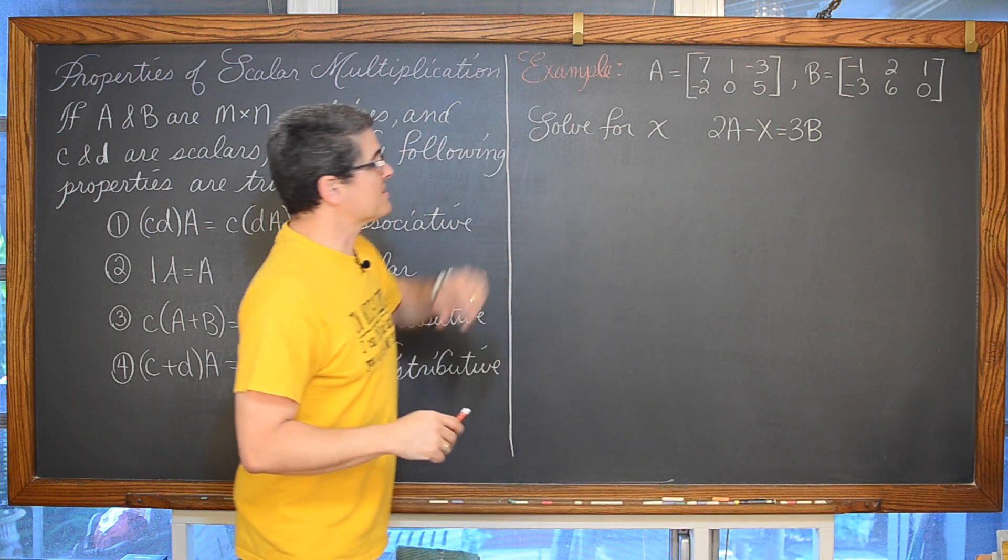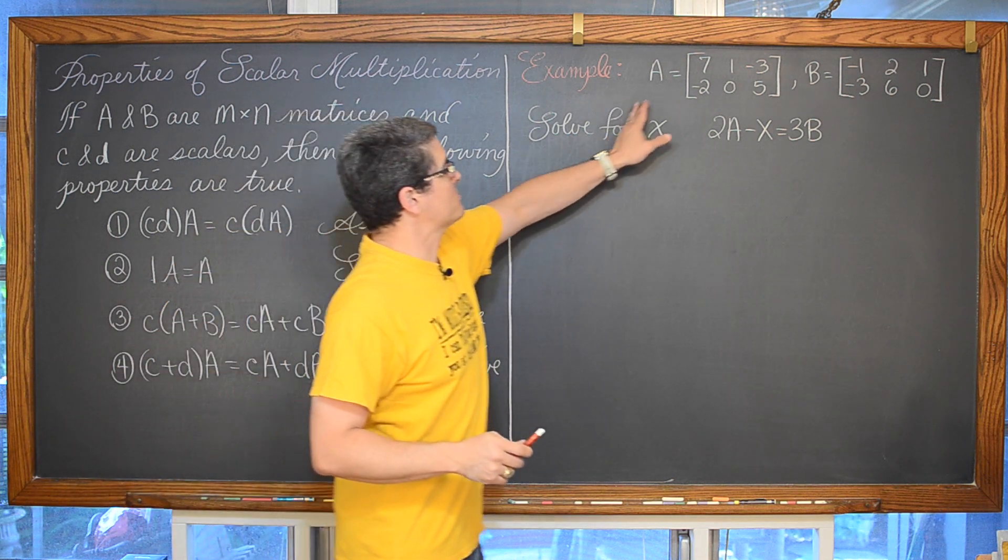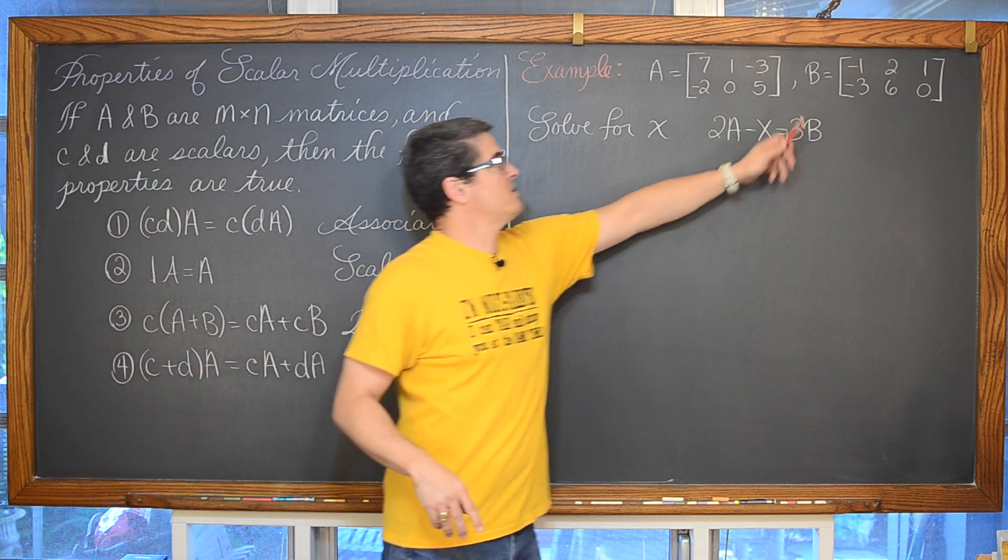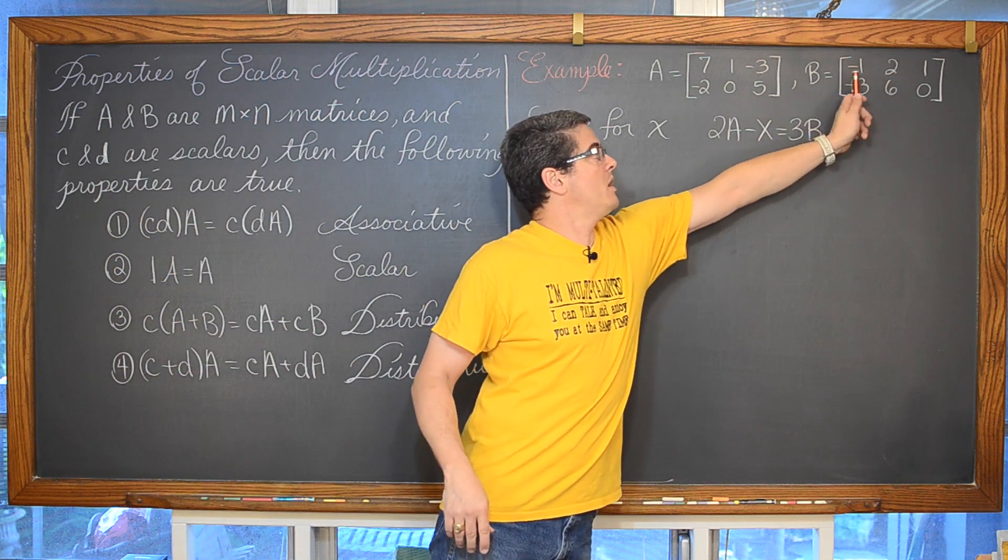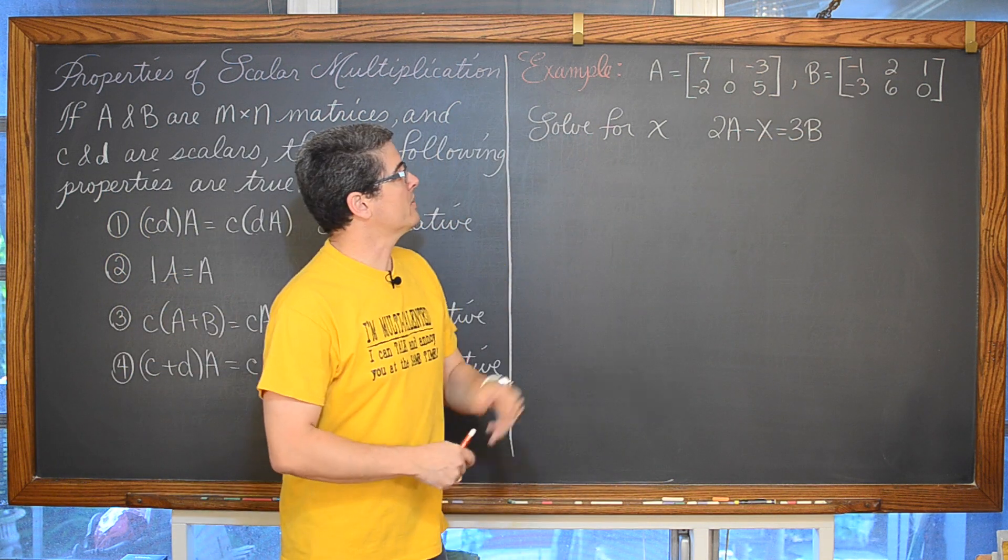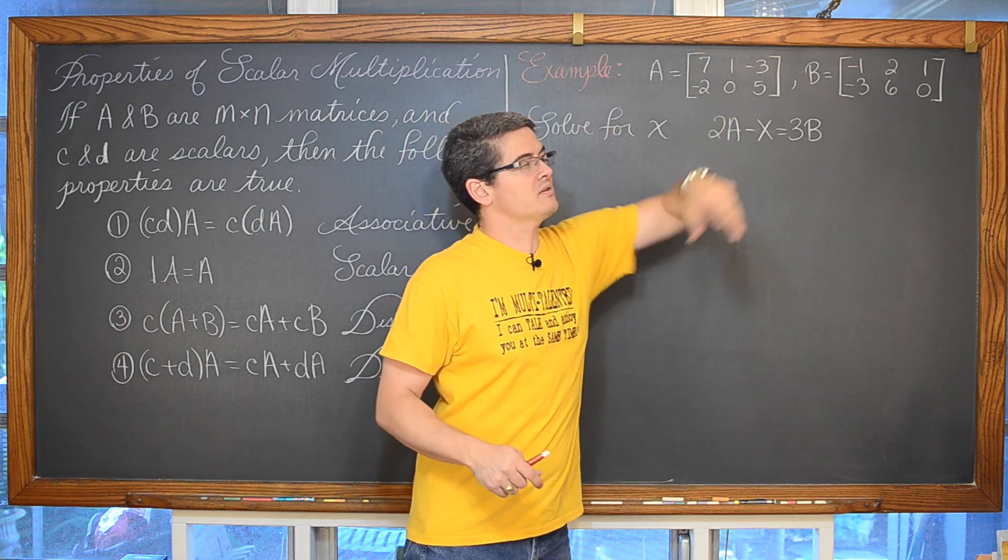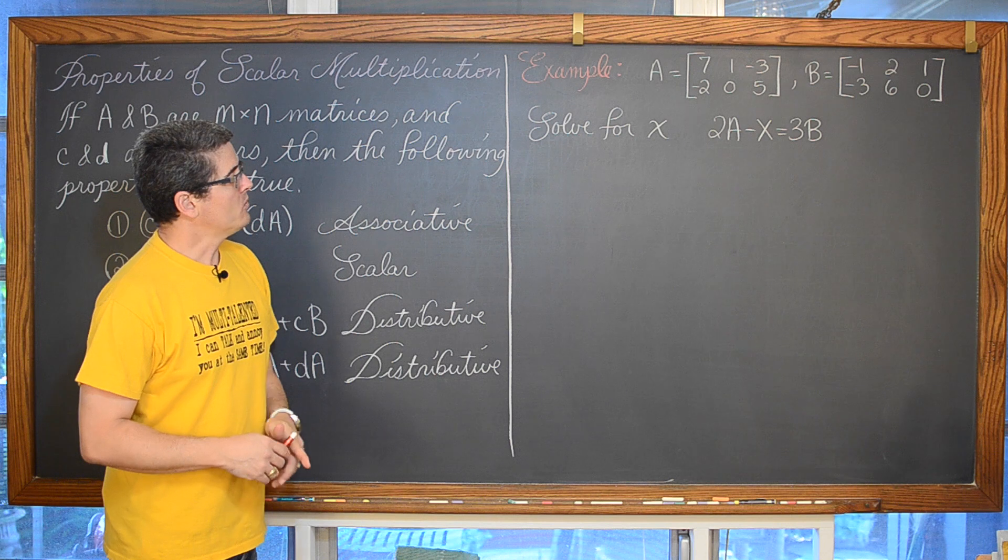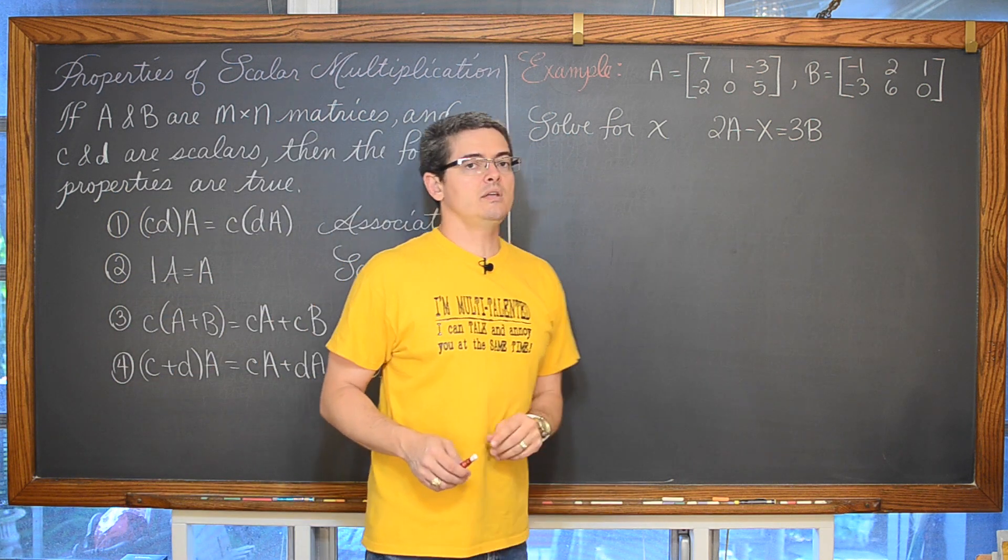Now on our next example, we have again those matrices of A, which is 7, 1, negative 3, negative 2, 0, and 5. And matrix B, negative 1, negative 2, 1, negative 3, 6, and 0. Again those orders are 2 by 3. The same matrices we had in the previous window. And we are going to solve this equation.